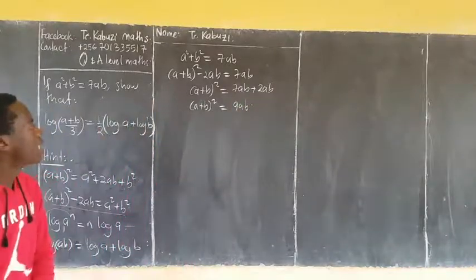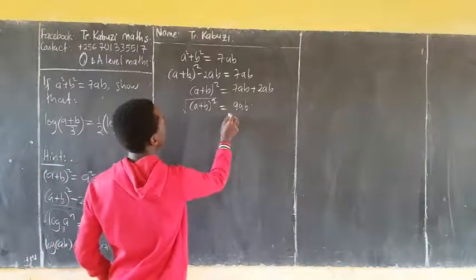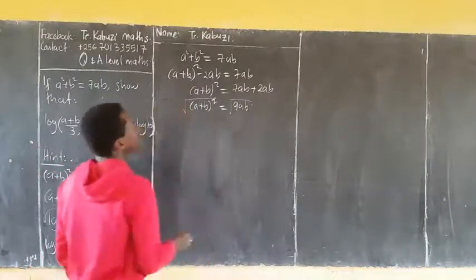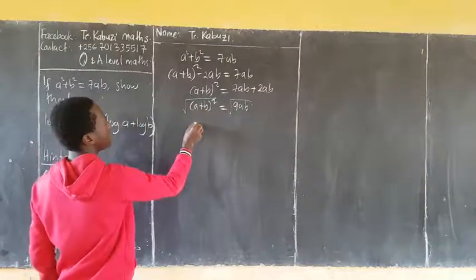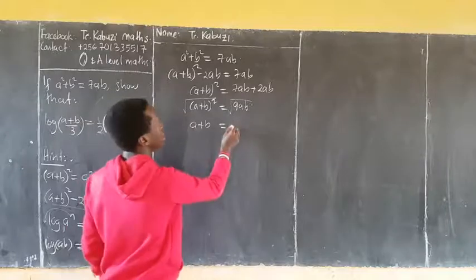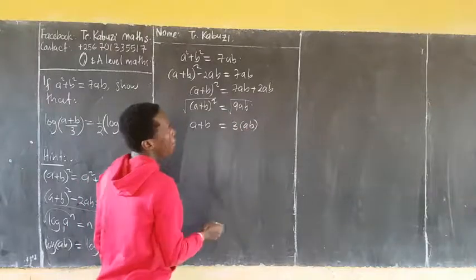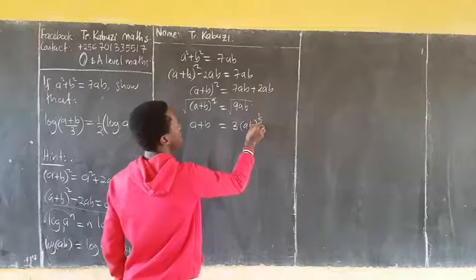What I am going to do? I am going to take square root of both sides. So square root of this, I am getting a+b equaling to square root of 9 is 3, then square root of ab. When I take square root, I am adding it as a half power.